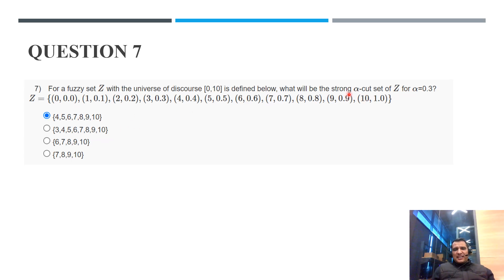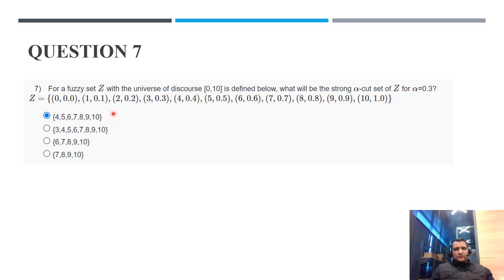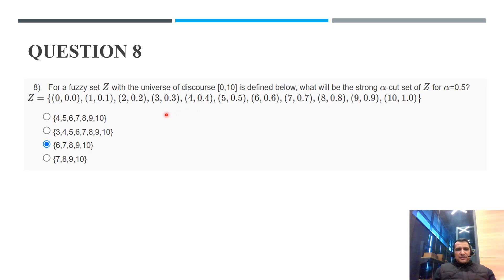Question 7: Same fuzzy set but with strong alpha cut at alpha = 0.3. In the strong alpha cut we must strictly exclude element 3, which has membership value exactly 0.3. Therefore the answer is {4, 5, 6, 7, 8, 9, 10}.